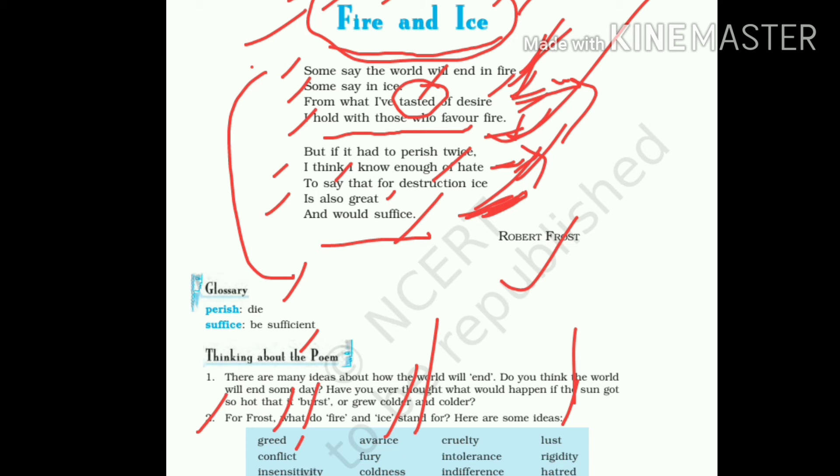I hope it is clear to you why the poet has used these two elements fire and ice. Because he wants to connect the desire, the fire of desire, and the hatred all around, which would be responsible for the disaster, for the end of this entire world.